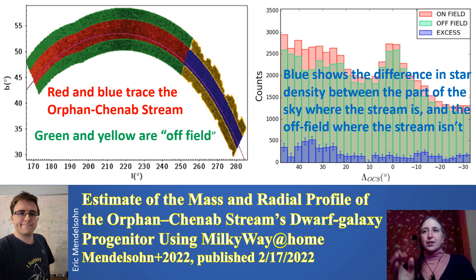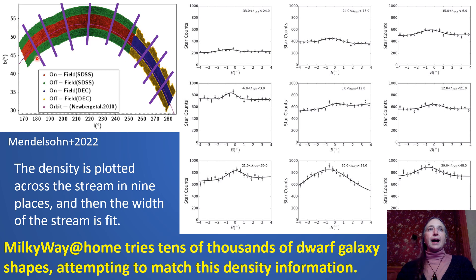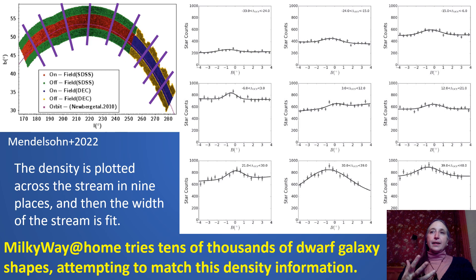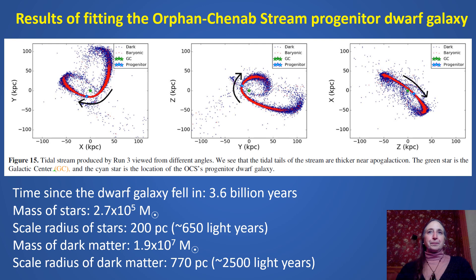In addition to having the density along the stream, we need to know the density across the stream. So we divide the stream up into nine pieces and plot the density of stars across the stream in each segment. We fit a background plus a Gaussian — the Gaussian being the fit to the stream — and the width of that Gaussian is what we give to Milky Way at Home for the stream width. We have nine places where we've measured the width of the stream, and then Milky Way at Home tries tens of thousands of dwarf galaxy shapes to find the best match to the data we see in the sky.